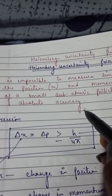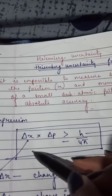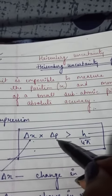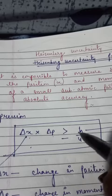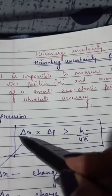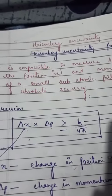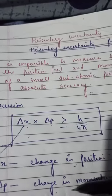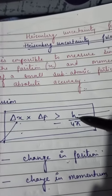The mathematical expression for this law is Δx × Δp ≥ h/4π, where Δx is change in position, Δp is change in momentum, and h is our Planck constant.